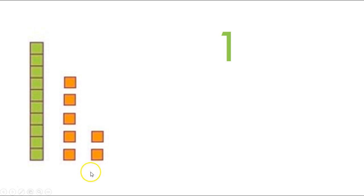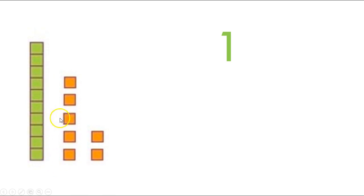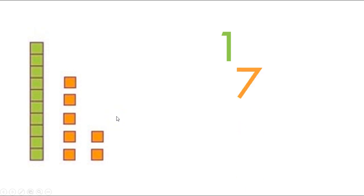Now, let's write how many ones we have, so we'll need to count how many ones. Let's count together: one, two, three, four, five, six, seven. So we can write a seven.